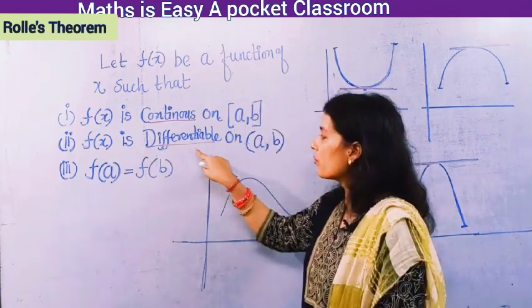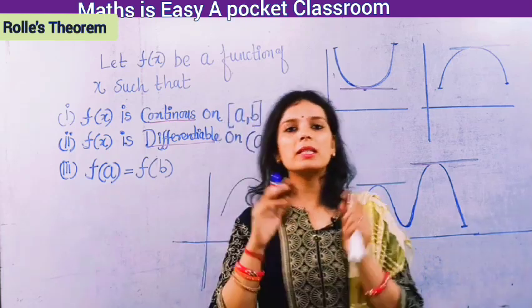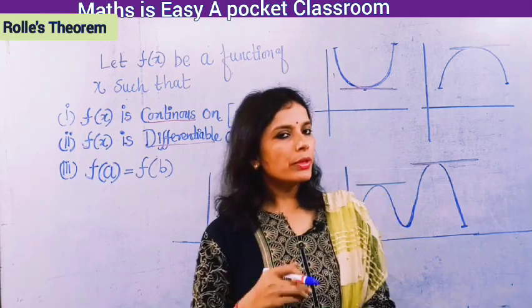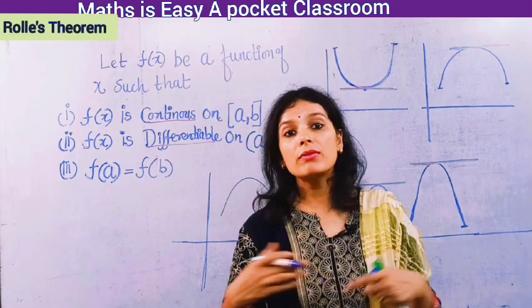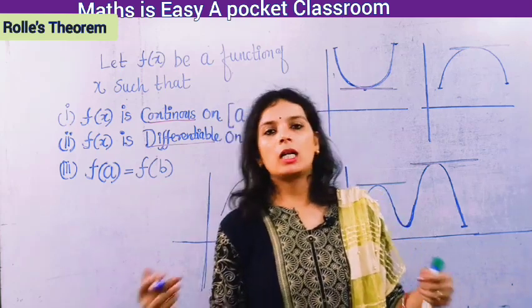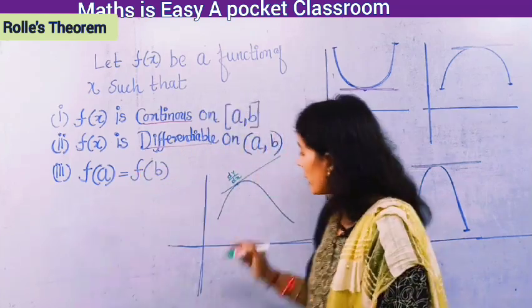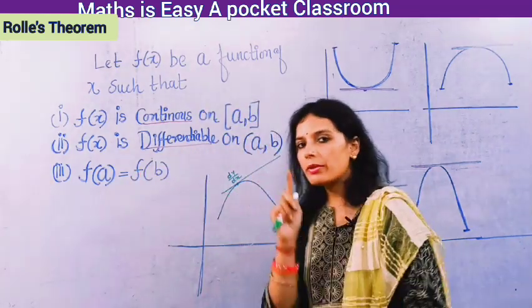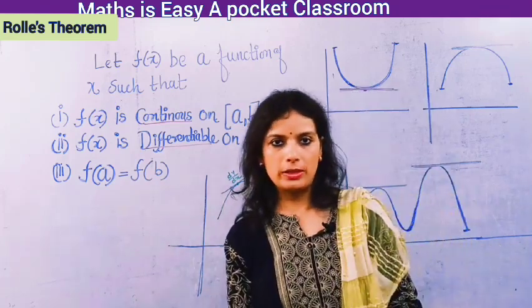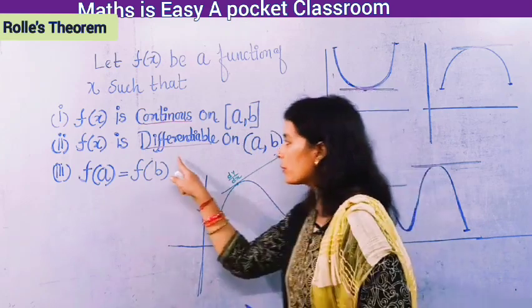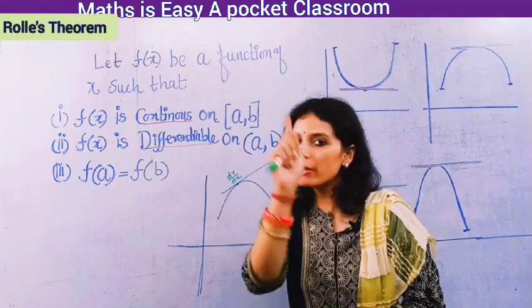Point 2: the function should be differentiable on the open interval (a, b). Differentiable means — it is a deep concept — if through a point you can draw a tangent to the curve, the function is differentiable at that point. So differentiable means we can draw a tangent to the curve.